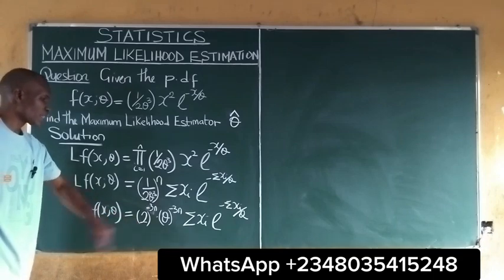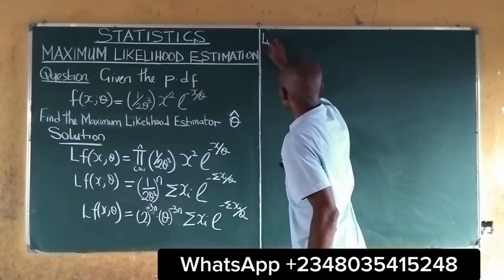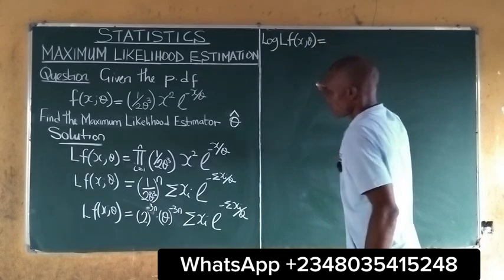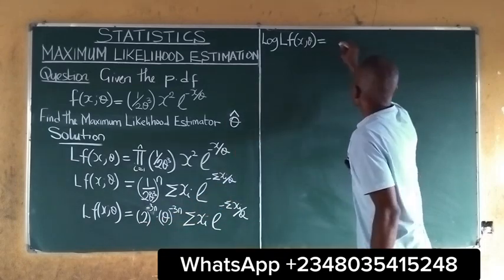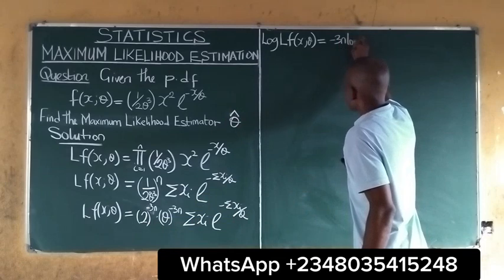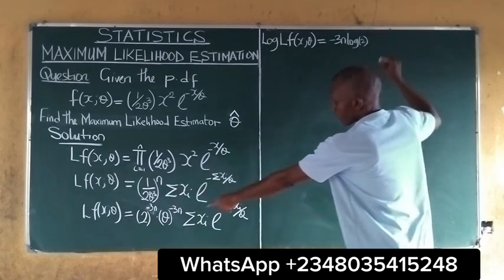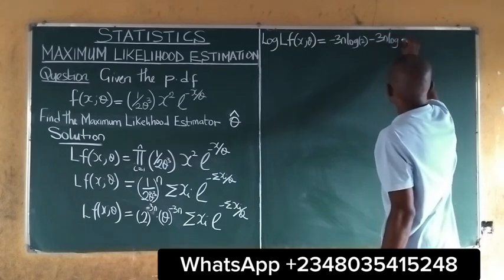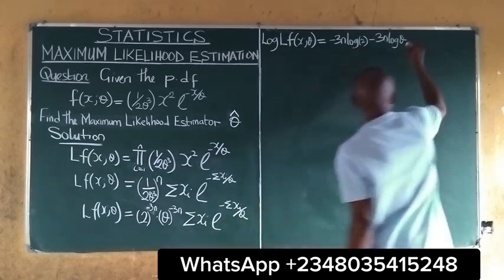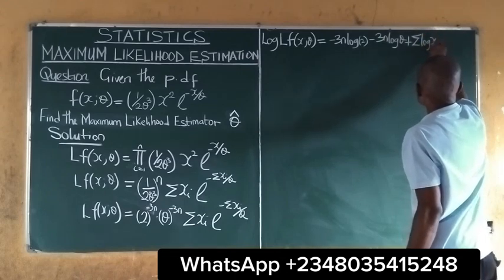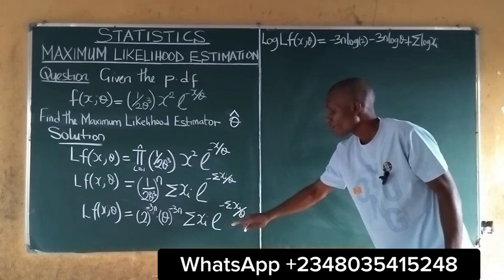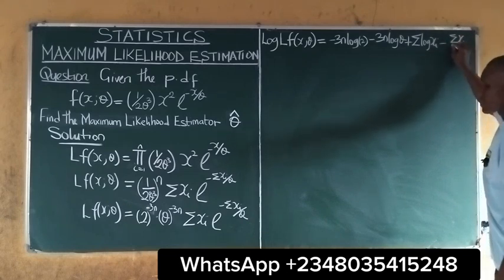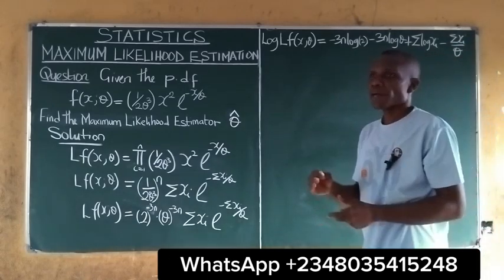Taking the log: log f of x and theta is equal to — if we take the log of this we get negative 3n log 2, and because of this sign we have negative 3n log theta. If we take the log of this we have plus summation of log xi, and if we take the log of an exponential function we get that same function, which is negative summation of xi all over theta.